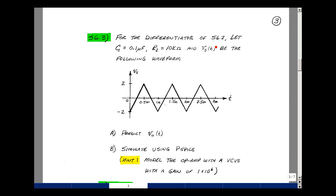For the differentiator circuit of supplemental problem 6.2, let's let C1 be 0.1 microfarad, R2 10k ohms, and let's let V sub S be this triangle wave that goes from minus 2 to plus 2, back to minus 2, and so on.